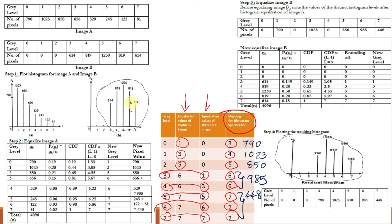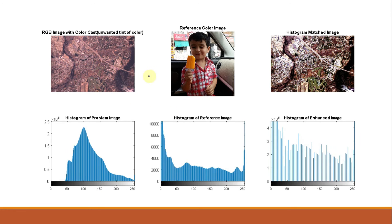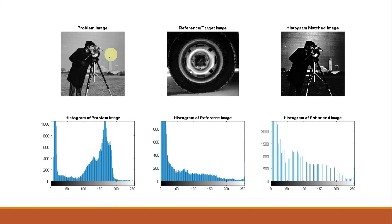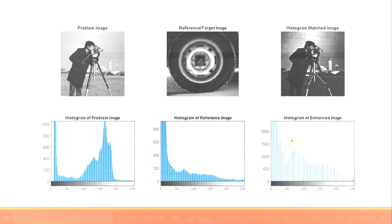When we perform histogram specification in MATLAB, the input is a RGB image with a color cast — an unwanted tint of color produced when one of the color channels is not working properly. This is the histogram of that problem image. After histogram matching with a reference color image, we obtain the output image. You can compare the histogram of the reference image with the histogram of the enhanced image — both are matching. The same histogram matching is also demonstrated using the built-in MATLAB images: cameraman and tyre.